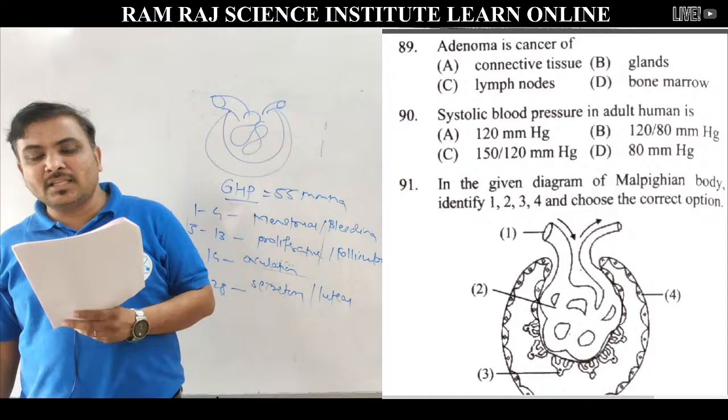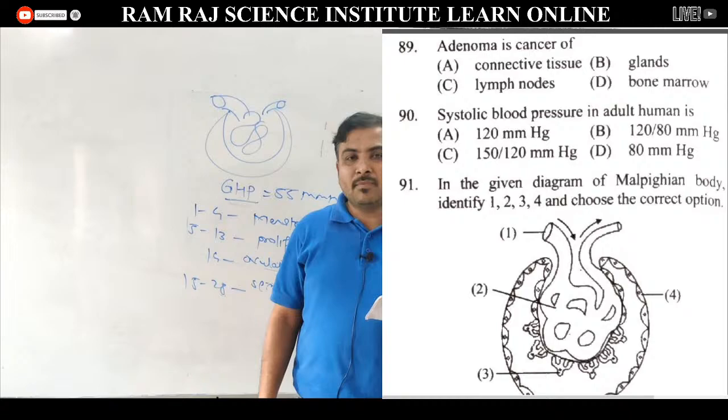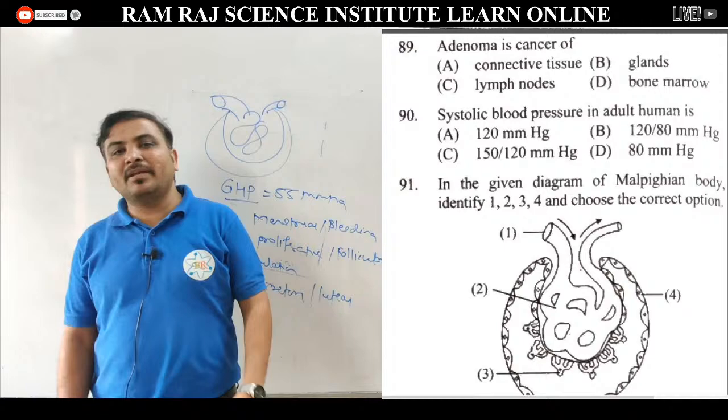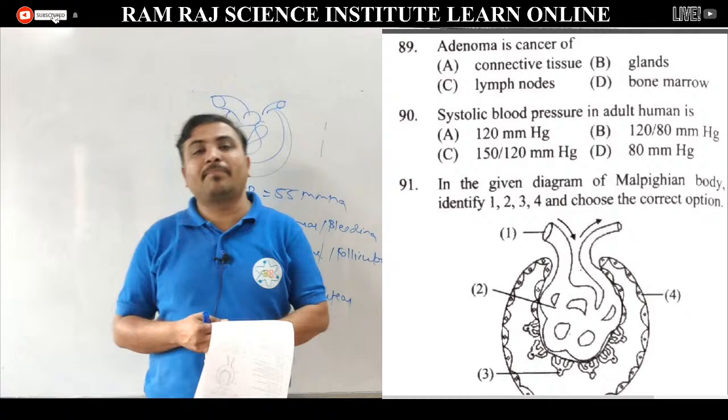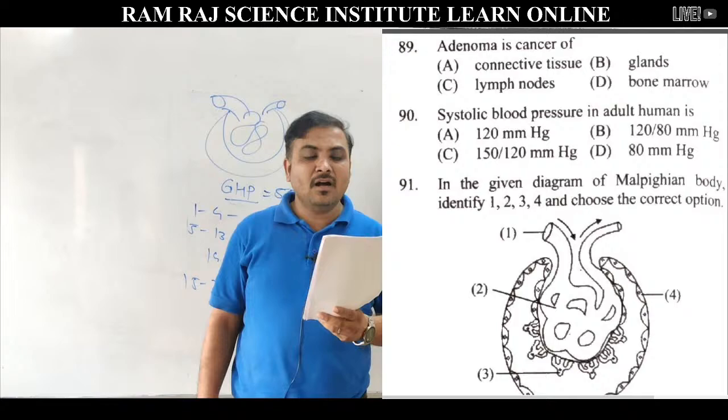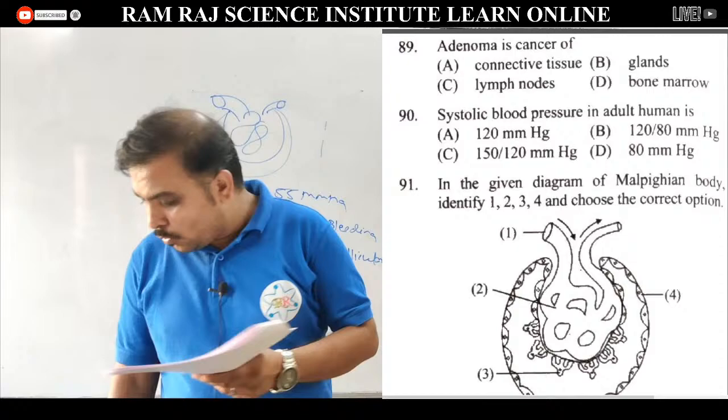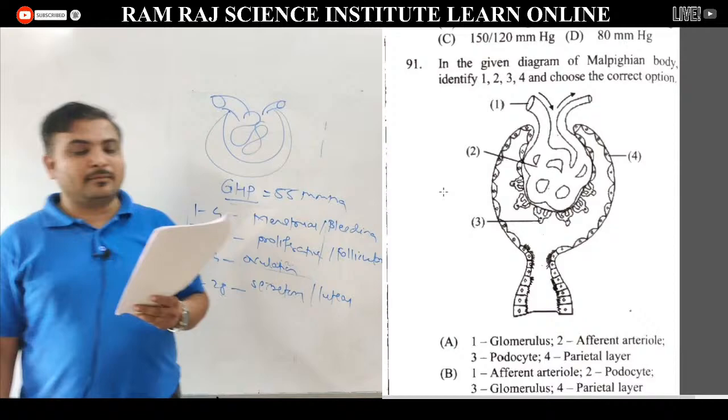Question 90: systolic blood pressure in adult human. Normal blood pressure है 120/80 mm of Hg. उसमें 120 mm of Hg systolic pressure है और 80 mm of Hg diastolic pressure है. तो adult human में systolic blood pressure है 120 mm of Hg.